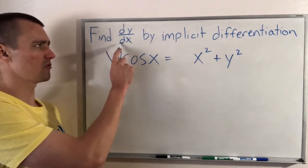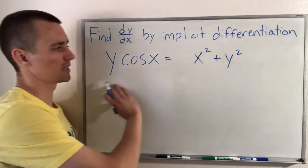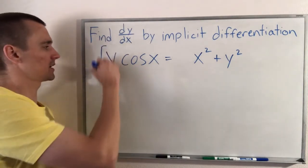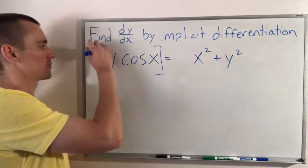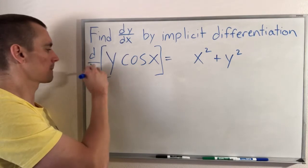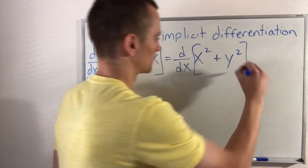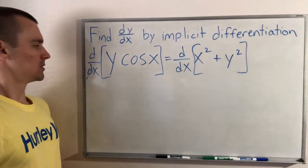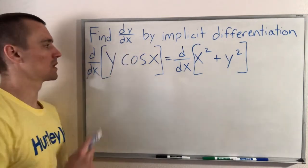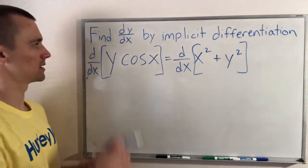Since we have a dx on the bottom of this, what we're going to want to do is take this equation, which has x's and y's in it, and take the derivative of both sides with respect to x. So we're going to take d/dx of both sides. We're doing d/dx because the dx is on the bottom here. If this was flipped, we'd be treating this problem very differently. But this is what we have.